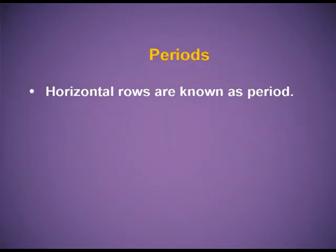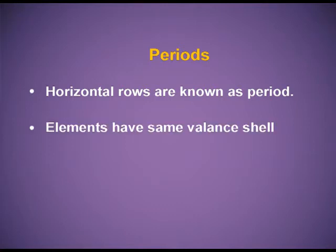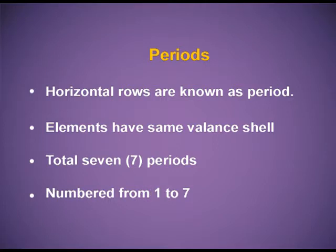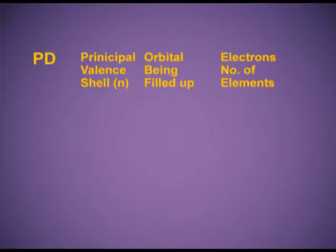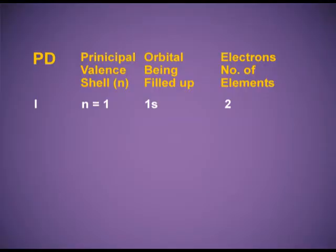Periods — the horizontal rows are known as periods. Elements in a period have the same valence shell. There are a total of 7 periods, numbered from 1 to 7. Period 1: the principal valence shell n = 1; the orbital being filled is 1s, which accommodates 2 electrons, giving 2 elements in the first period.